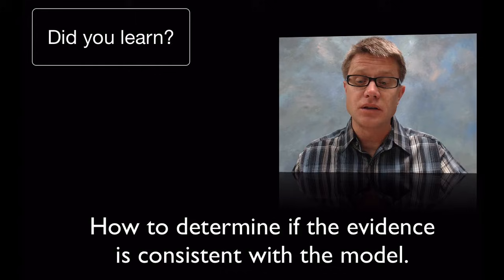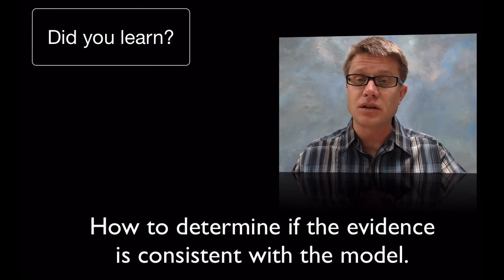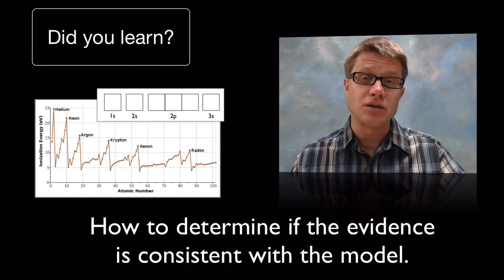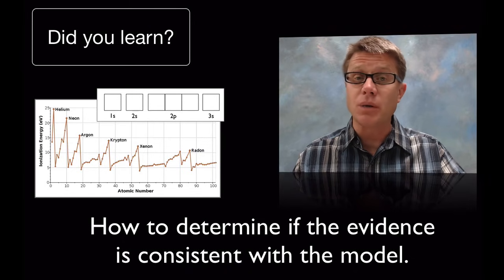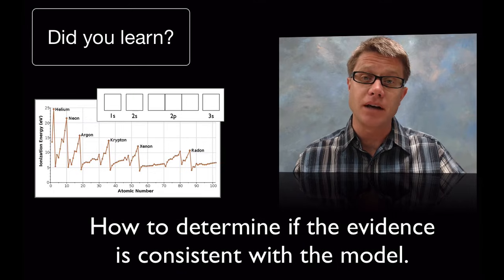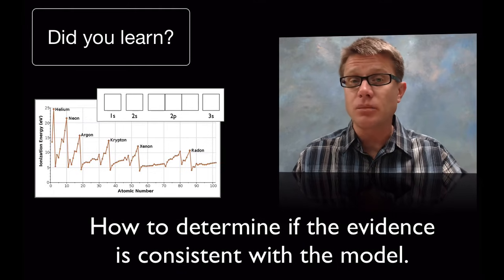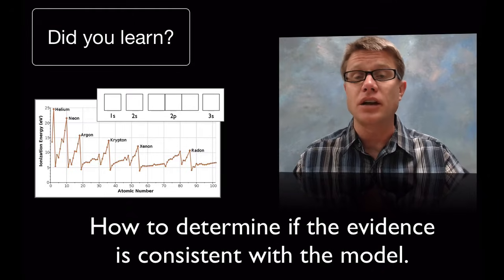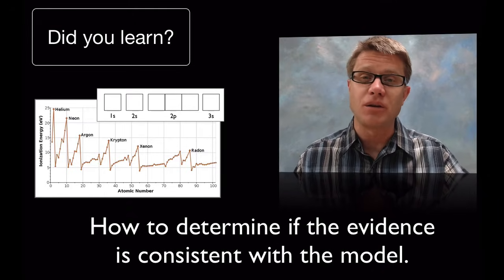And so what you should have learned is how to determine that evidence is consistent with the model. And so I would point you back to this. The data coming in from ionization energy didn't fit the model, that Bohr model that we had. So we had to modify it. And we'll probably modify our current model in the future as well. And it will give us a better and better understanding of an atom and what an atom is like. But I hope that was helpful.